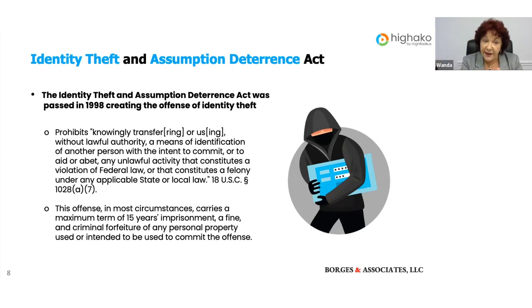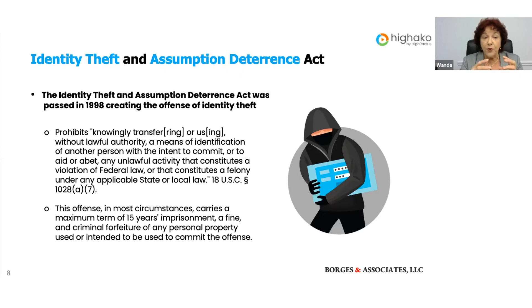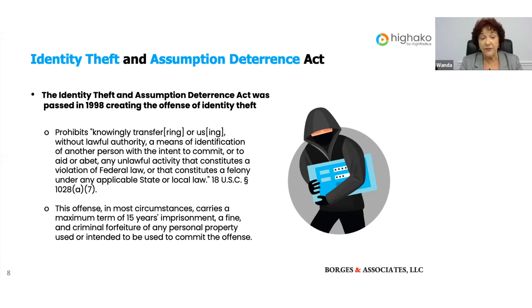Even as far back as 1998, there was a federal law passed: the Identity Theft and Assumption Deterrence Act. This was created to prohibit one from knowingly transferring or using, without lawful authority, any means of identification of someone else, with the whole purpose to aid or abet any unlawful activity that constitutes a violation of federal law. This offense in most instances carries a maximum penalty of 15 years plus a fine and perhaps criminal forfeiture of any personal property used in the offense.